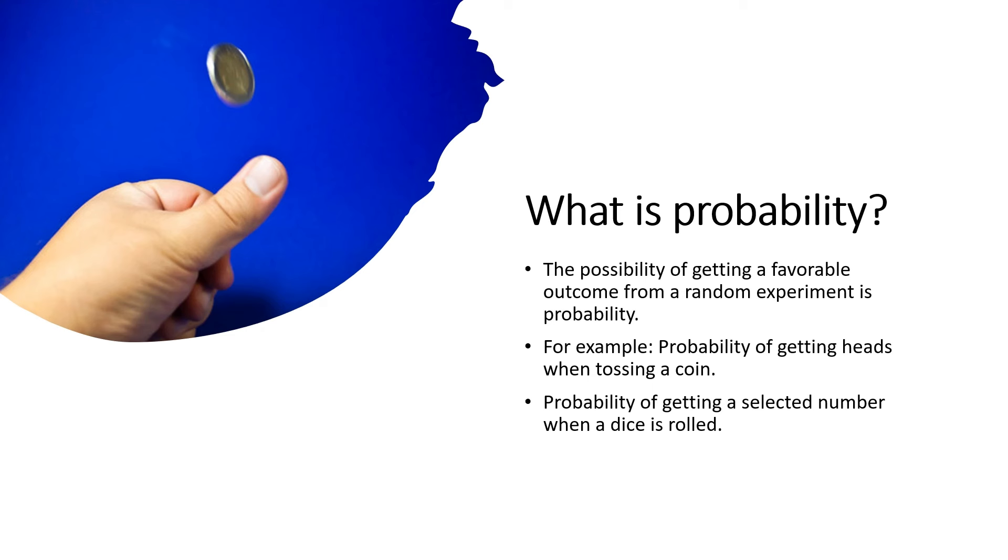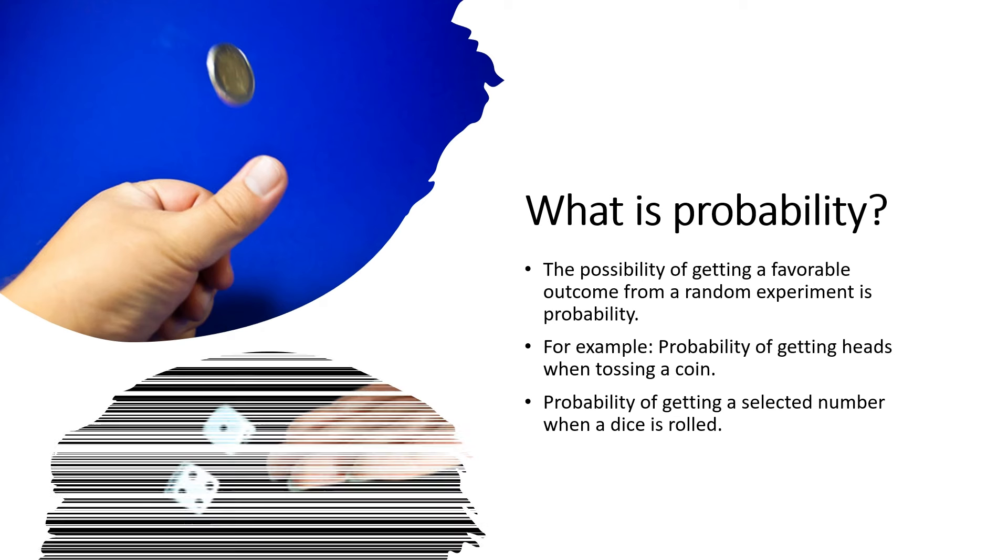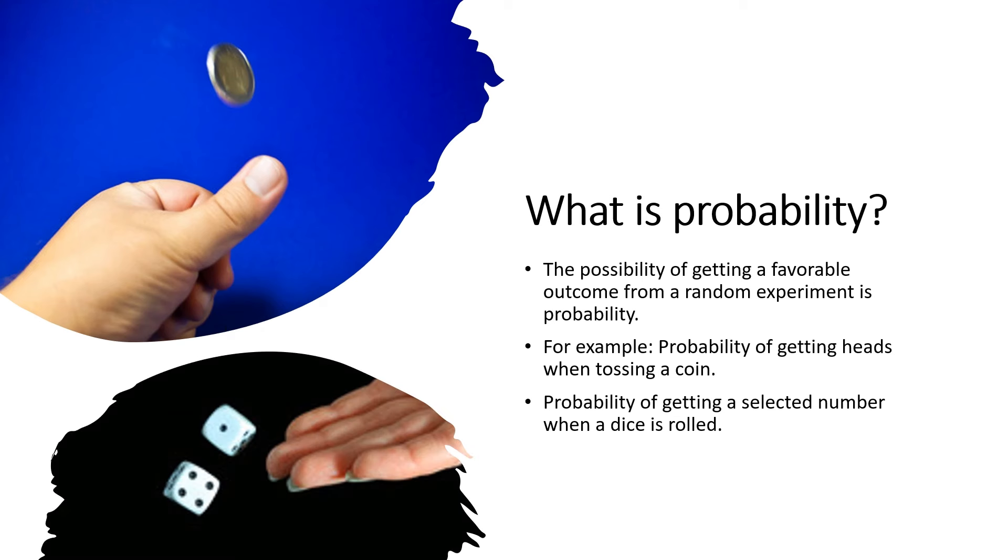These are the probabilities of tossing a coin, one of the actions which results in an experiment. Similarly, for probability of getting a selected number when you are rolling a dice, it's like one to six.